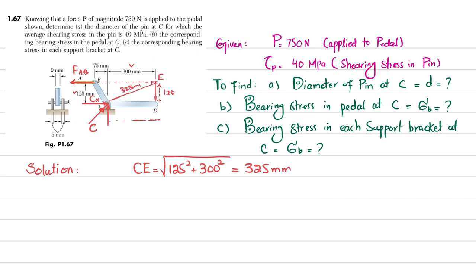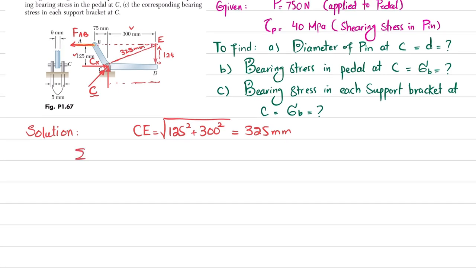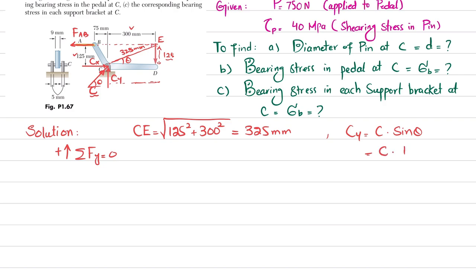Now we are interested in finding C. C can be found using the equilibrium condition: the sum of all forces along the Y direction must equal zero, with upward forces taken as positive. We have three forces: P downward, and the vertical component C_y. If this makes angle theta, then C_y equals C times sin(theta), and sin(theta) equals 125 divided by 325.